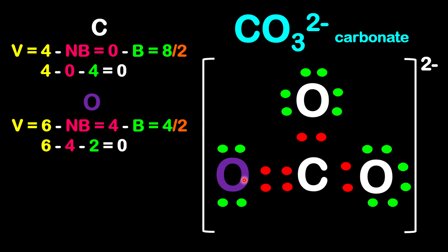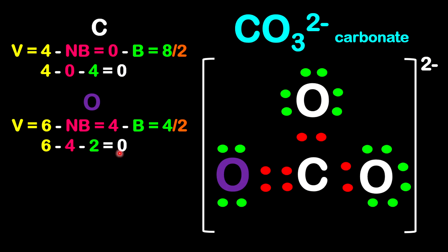For this oxygen, which is different from the other two — notice here we have a double bond, while the other two oxygen atoms have single bonds. So we treat it differently. Even though the atoms are the same, if they are bonded differently, you have to calculate them differently. So oxygen is in group 6. This oxygen has 4 non-bonding electrons and 4 bonding electrons, so 4 divided by 2. So it's 6 minus 4 minus 2 gives 0.